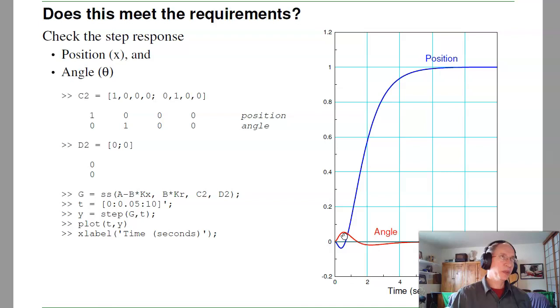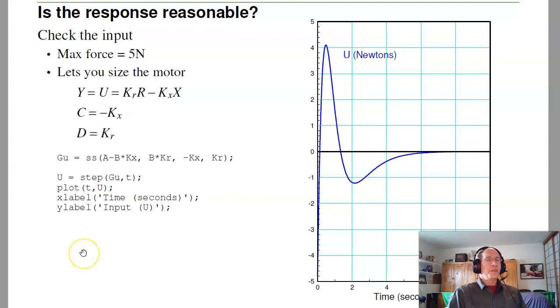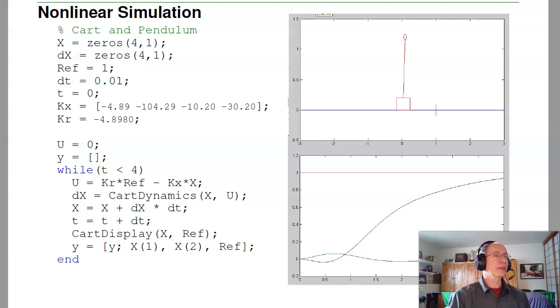Next thing to check is the input reasonable. One way to do that is instead of plotting the output, let's plot the input. The input U is kr times r minus kx times x. So keep the same closed loop A matrix, same input B matrix, change C and D. If I make C equal to minus kx, D equal to kr, then my output is U. So taking the step response and plotting U versus time looks like this. That just tells me as long as I'm able to apply about five newtons of force, it'll work.